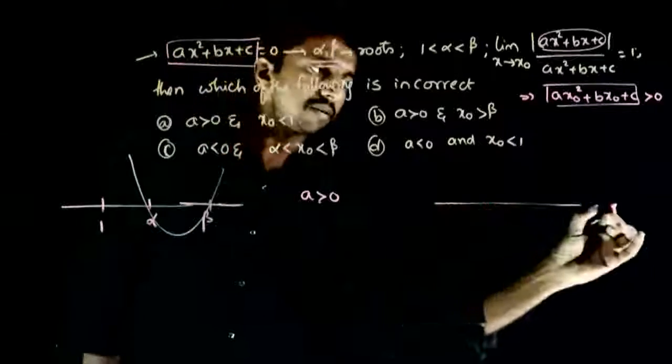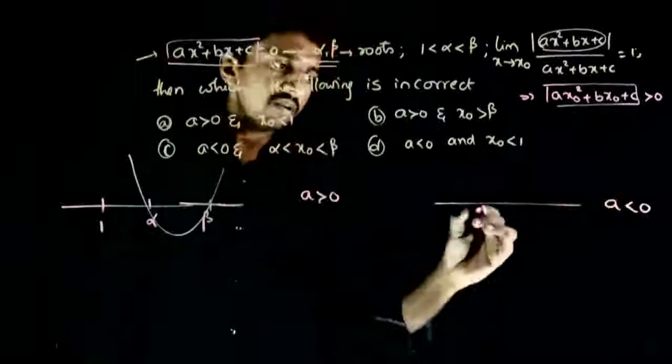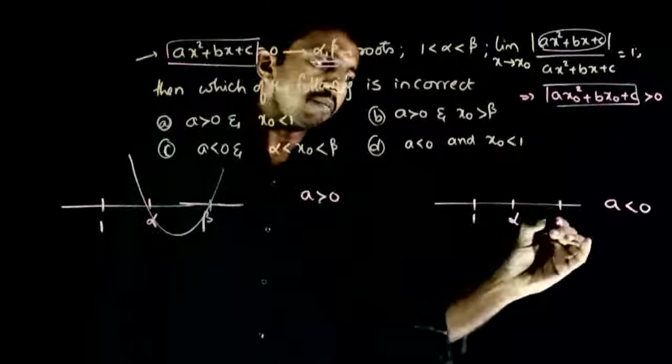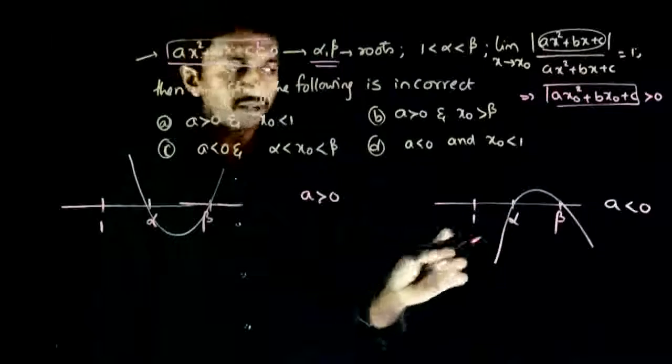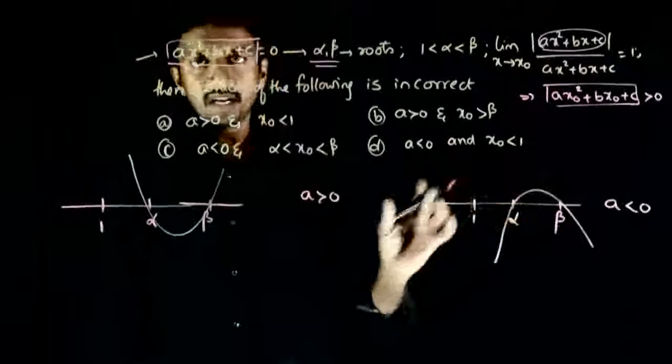If a is less than zero, the graph will be like this. Between alpha and beta it will be positive, outside alpha and beta it will be negative.